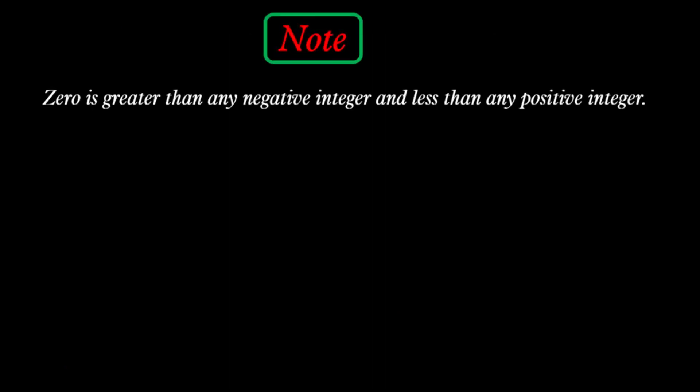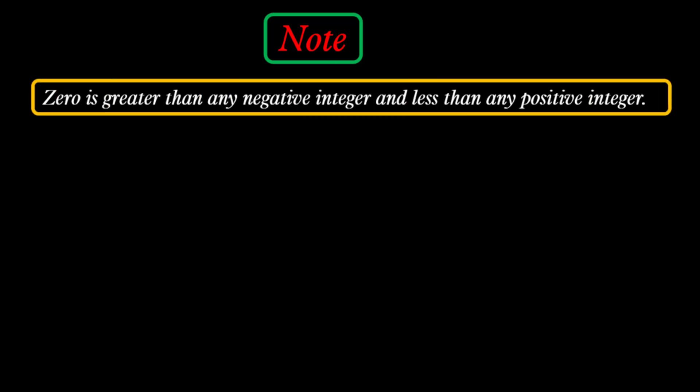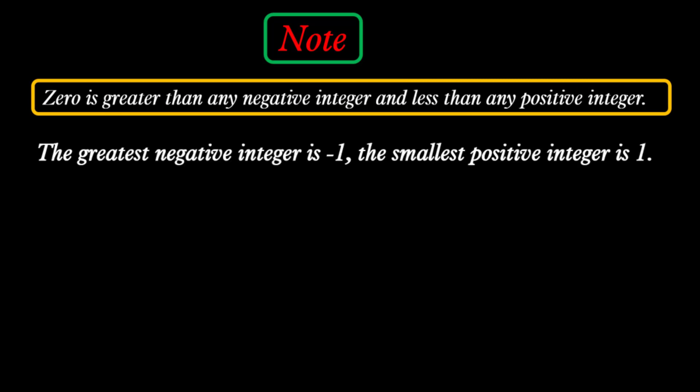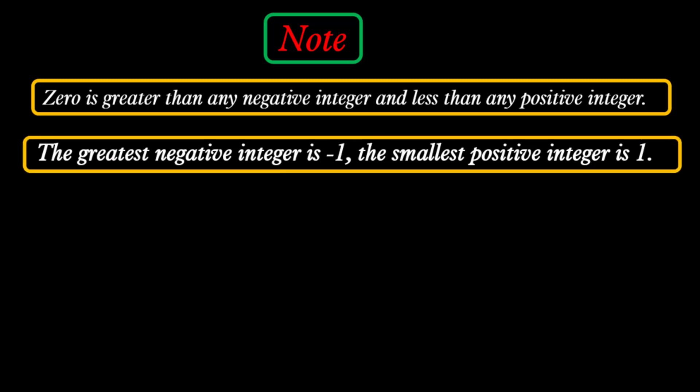Let's remember some important notes. First, 0 is greater than any negative integer and less than any positive integer. Second, the greatest negative integer is negative 1. And the smallest positive integer is 1.